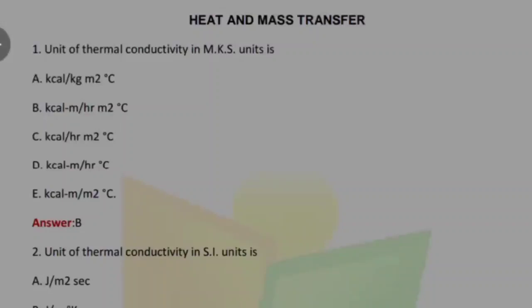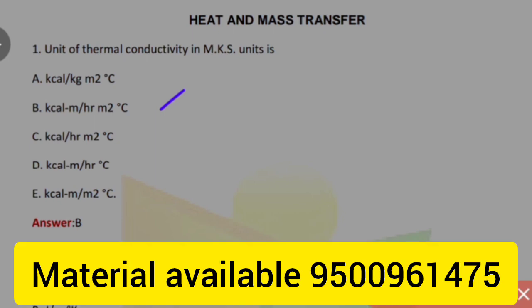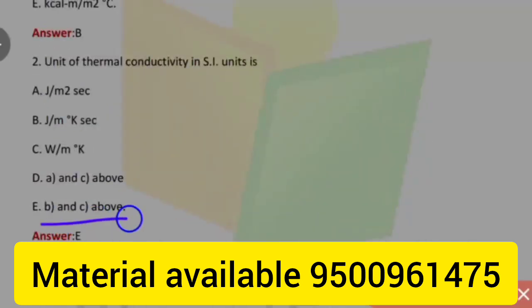Unit of thermal conductivity in MKS units is kcal per meter hour meter squared degree Celsius. Unit of thermal conductivity in SI units is J per meter degree Kelvin seconds, or W per meter degree Kelvin.